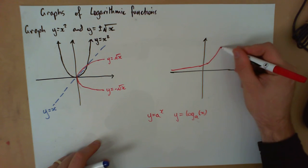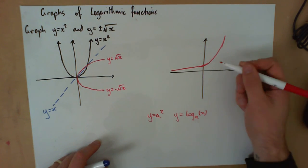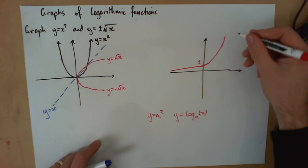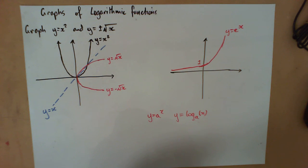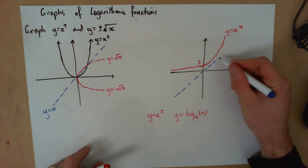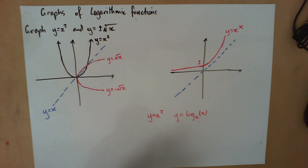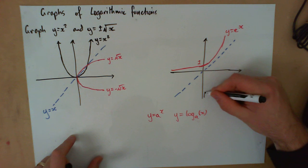If we think about our exponential graph, we know it comes through like that and passes through the point one — that's our y equals e to the x. Now if they're inverses, they should do the same thing as this reflection in the line y equals x.